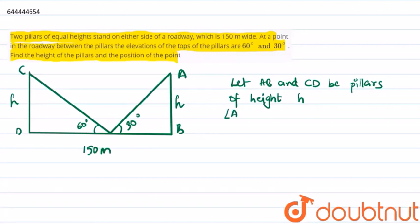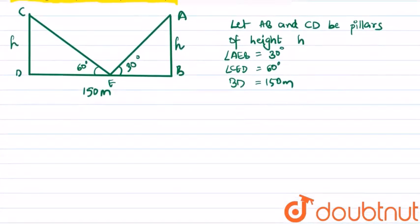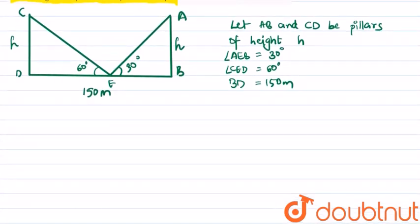Let AB and CD be pillars of height h. Let us name the point as E. Therefore angle AEB equals 30 degrees, angle CED equals 60 degrees, and the distance BD is given as 150 meters.